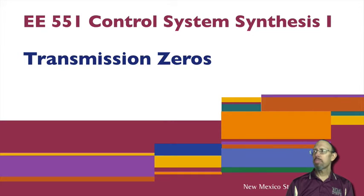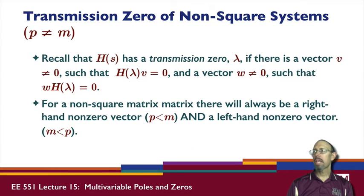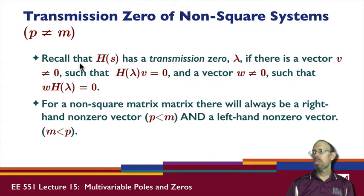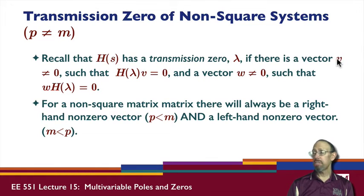Transmission Zero. Now we're going to look at transmission zeros of systems. We're going to start off looking at the case of non-square systems. Recall that H of S has a transmission zero, lambda, if there's a non-zero vector V such that H of lambda times V is equal to zero.